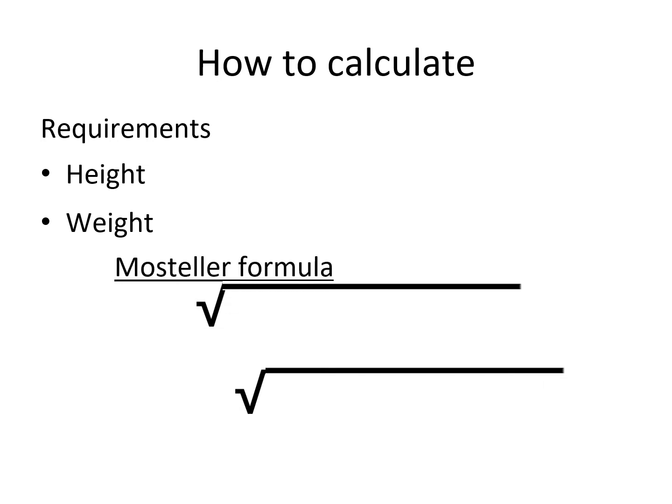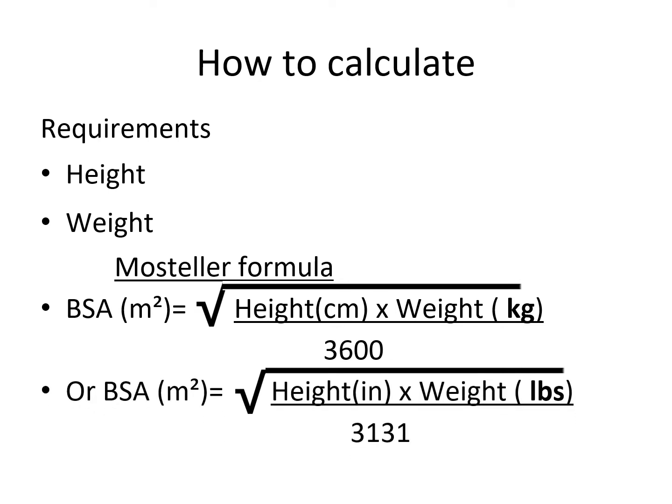For example, in Mostella formula, there is a formula that you can either use height in cm or in inches and weight you can use in kg or pounds. For Mostella formula, body surface area is equal to the square root of height in cm multiplied by weight in kg divided by 3600. But when we use inches and pounds, the formula changes a little bit and the BSA would be the square root of height in inches multiplied by weight in pounds divided by 3131.